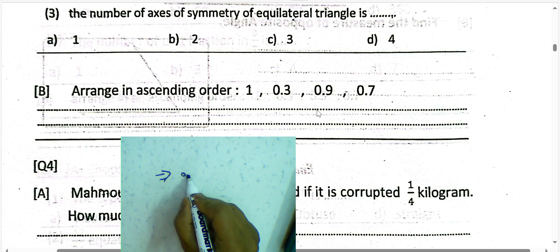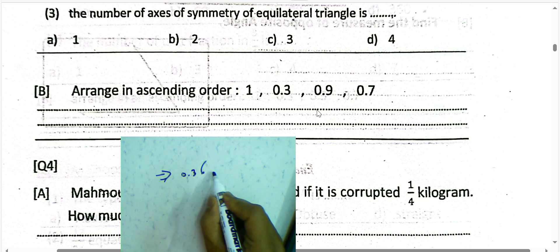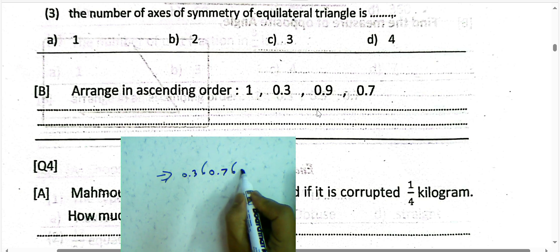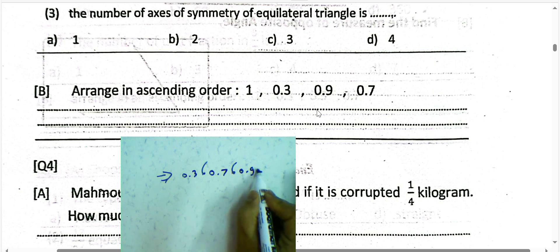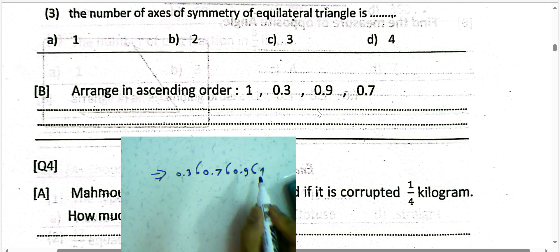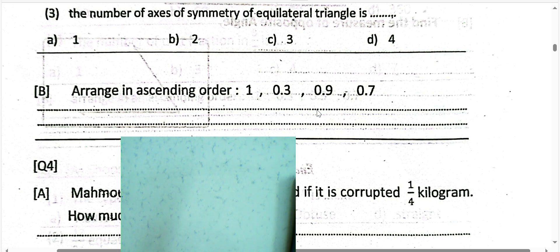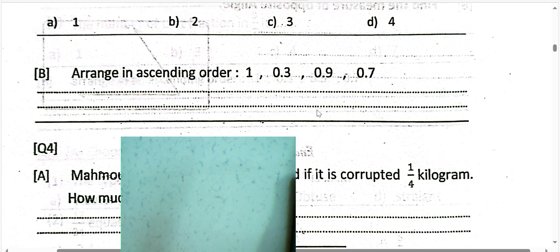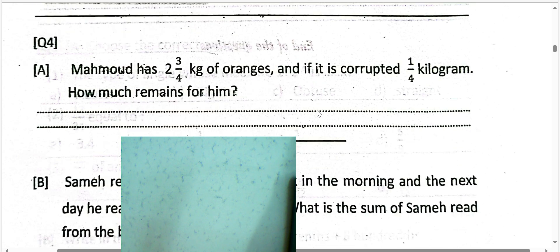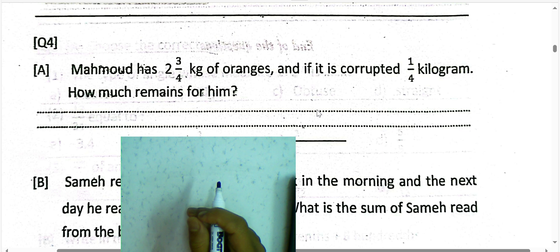Next question: arrange in ascending order from left to right. First is 0.3, then 0.7, then 0.9, and then 1.